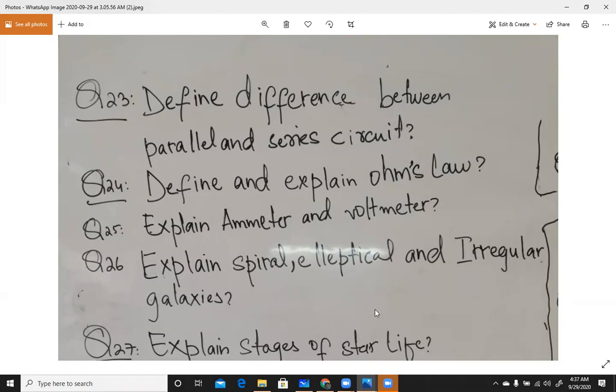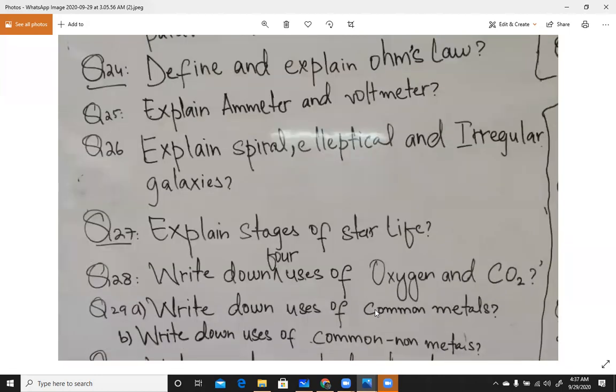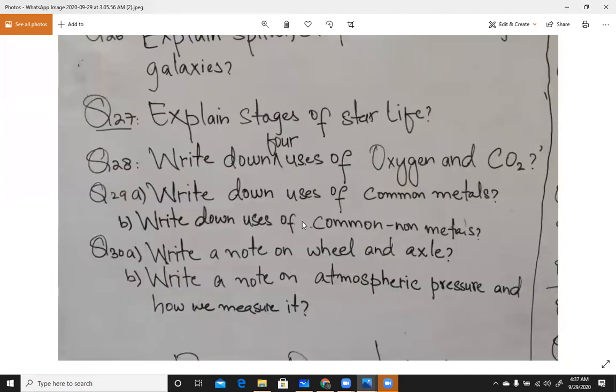I am confused. I remember one year ago, which year has come. I was thinking. Explain spiral, elliptical and irregular galaxies. These three are not coming. No one comes. Explain the stages of star life.